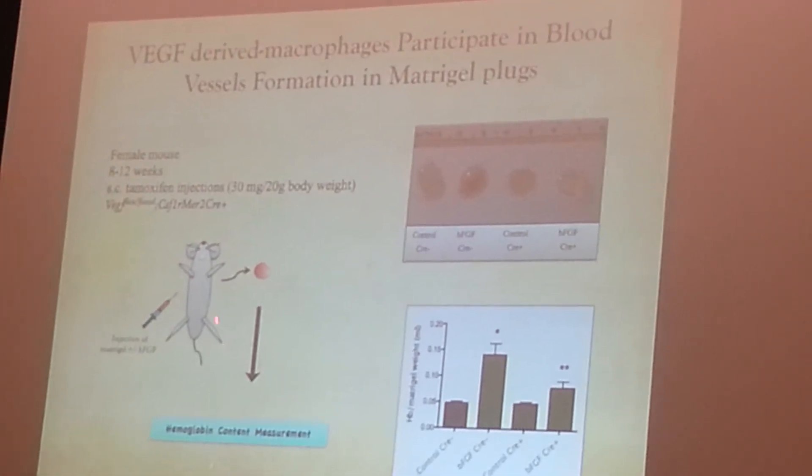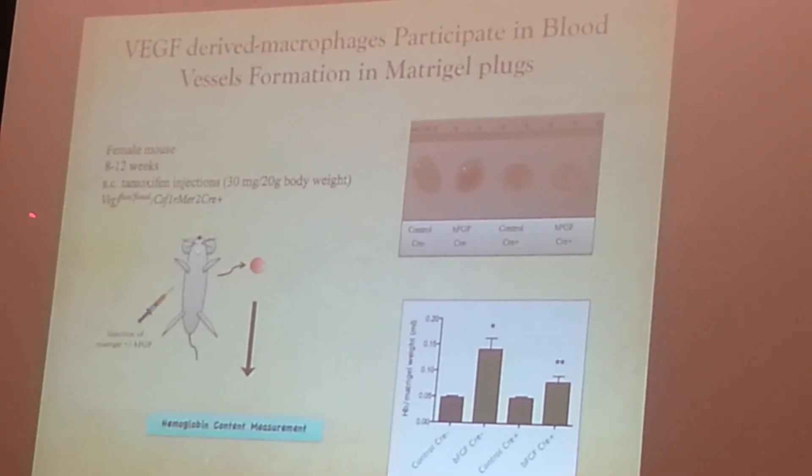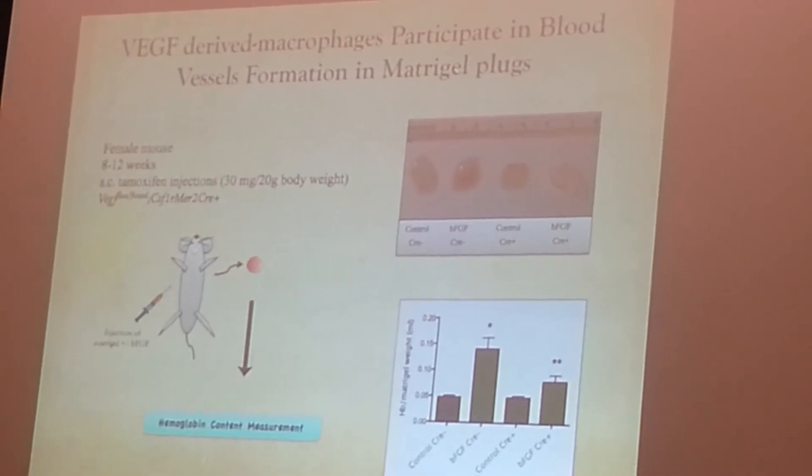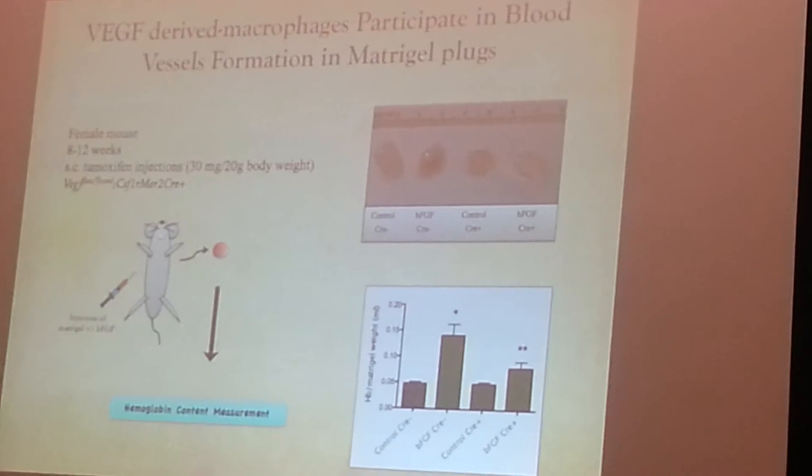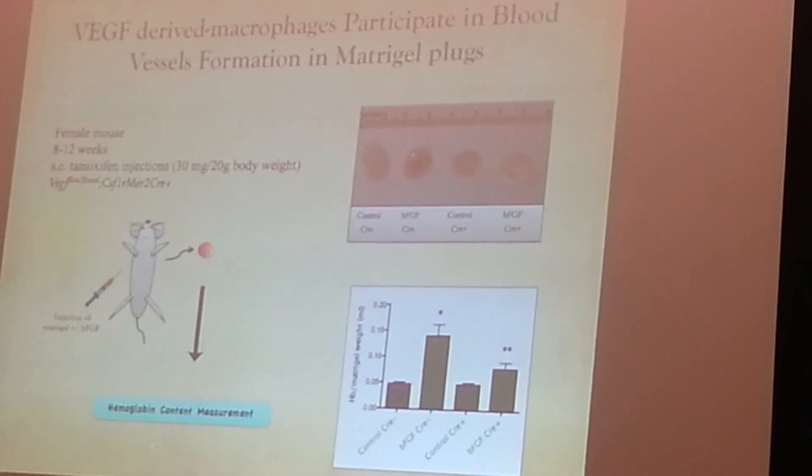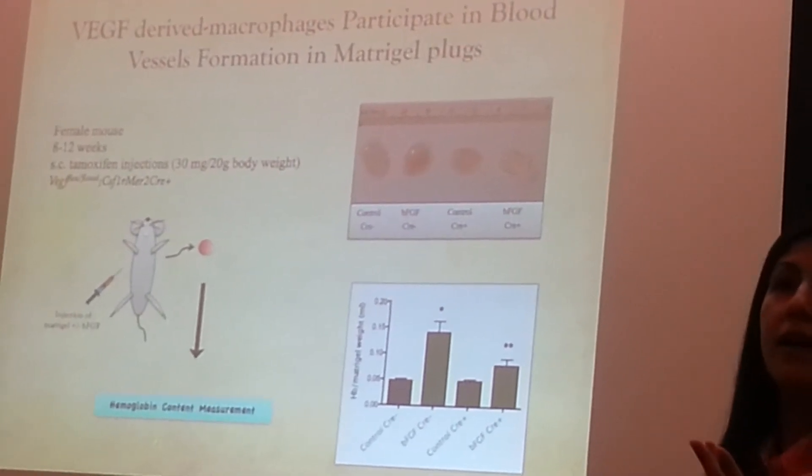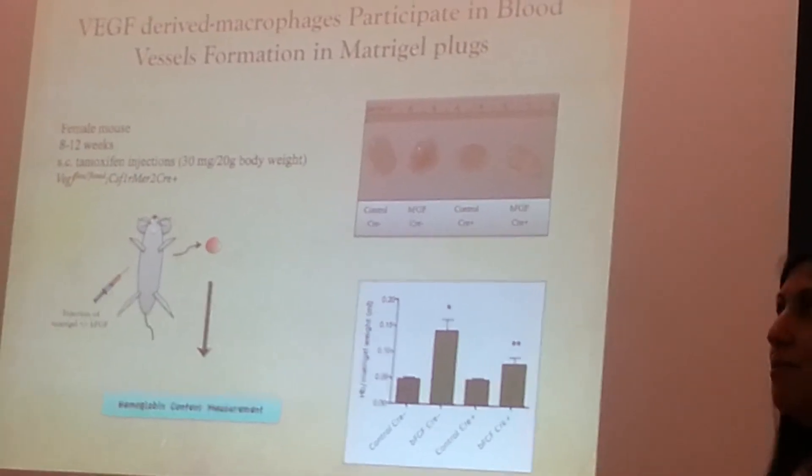Basically, these animals have macrophages, but the macrophages cannot produce VEGF. I inject the plug to check if we have any infiltration of these macrophages in the plug, but they don't have VEGF. What happens with them?